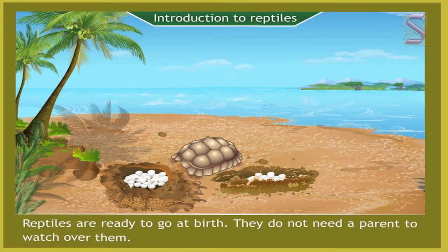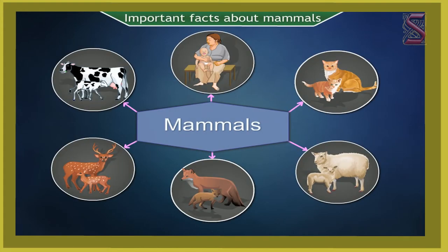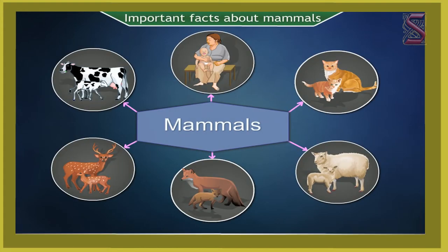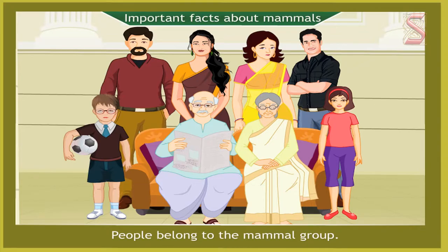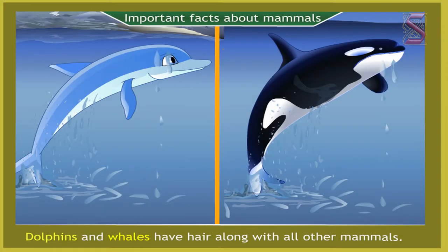Reptiles are ready to go at birth; they do not need a parent to watch over them. Important facts about mammals: there are about four thousand different kinds of mammals. People belong to the mammal group. Dolphins and whales also have hair, along with all other mammals.